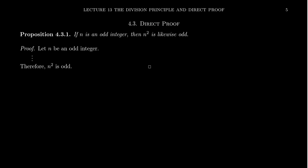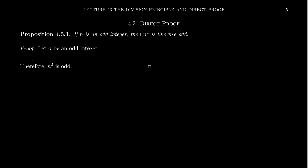What I want to do in this video is demonstrate by example how one can write a proof of a conditional statement using direct proof. The formula is always the same: you start with the assumptions and end with the conclusion — what happens in the middle depends on the argument itself. Consider the following conditional statement: if n is an odd integer, then n squared is likewise odd. The first sentence of the proof will say something like 'assume n is an odd integer' or 'let n be an odd integer.'